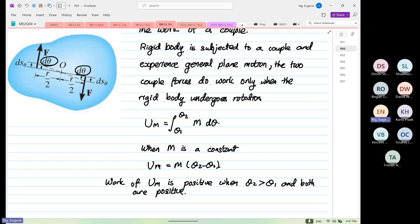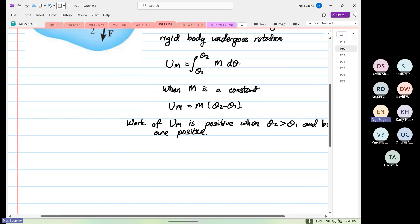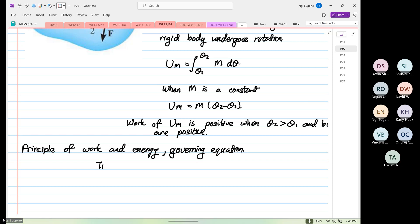Don't worry about the last term too much. And the final form of the expression that we're going to do, we're going to apply this equation when you use the principle of work. So this is known as the principle of work and energy. The governing equation is T1 plus the summation of work done from point 1 to point 2 and this is equal to T2.